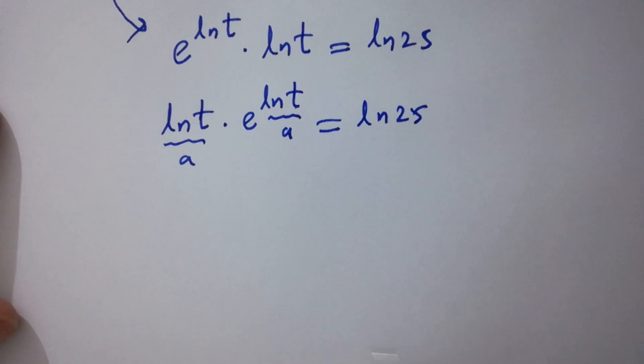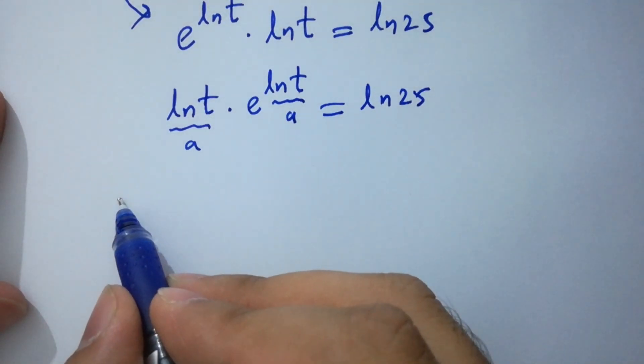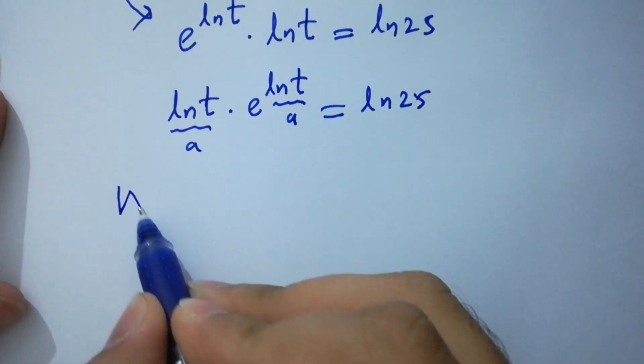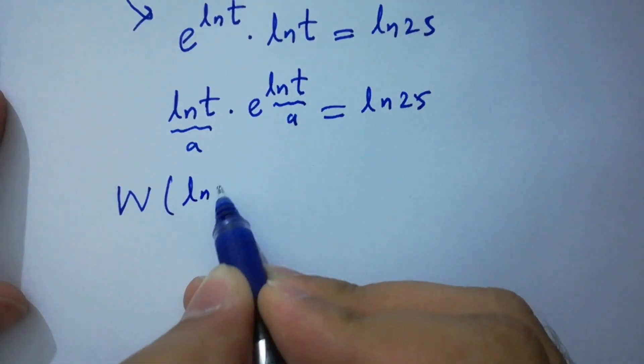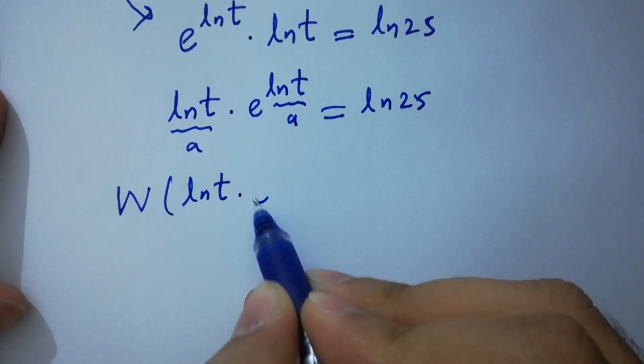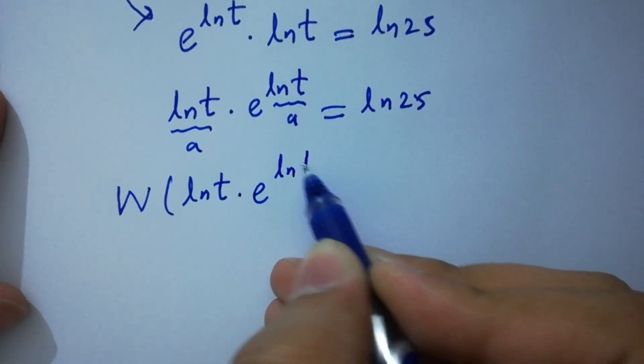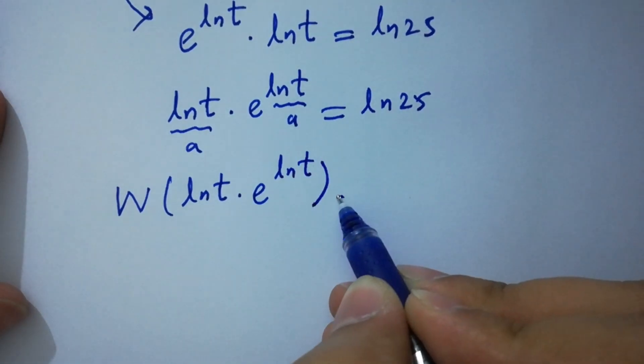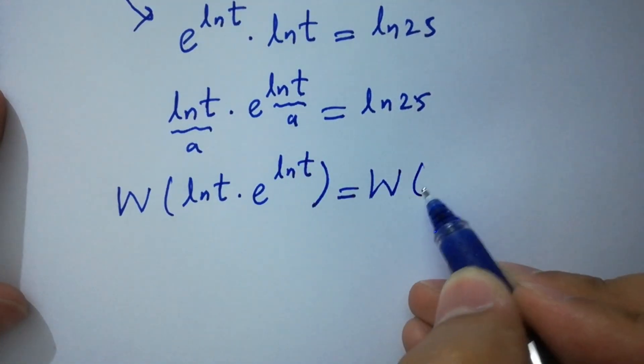In the next step, I am going to apply here Lambert W function. W of ln t times e to the power ln t equals W of ln 25.